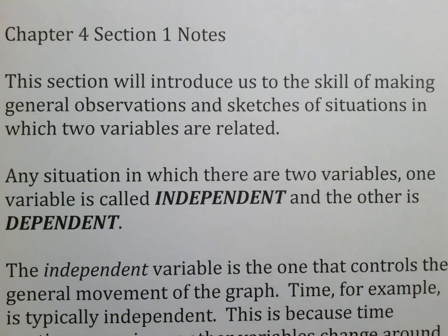Today we're going to be talking about chapter 4, section 1. This section is going to introduce us to the skill of making general observations and sketches of situations in which two variables are related. Any situation in which there are two variables, one variable is called independent and the other variable is called dependent.